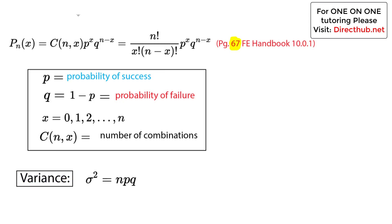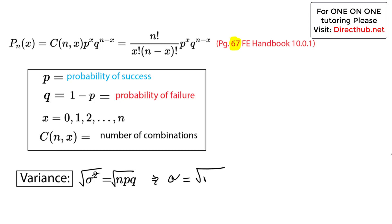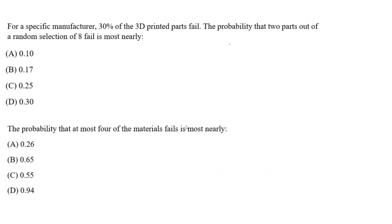The handbook also covers variance, sigma squared, and standard deviation, sigma. The variance sigma squared equals N times P times Q, where P is the probability of success and Q is the probability of failure. Standard deviation is the square root of both sides, so sigma equals the square root of N·P·Q. That's an extra note just in case. We're going to be focusing on using the calculator mostly.